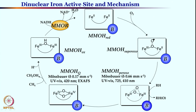This intermediate Q, once formed, can react with methane to give methanol. This is the real active species that converts methane to methanol, and from there the dihydroxo intermediate MMOH_ox is generated, which in the presence of NADH and reducing equivalents regenerates the original reduced compound, completing the catalytic cycle.